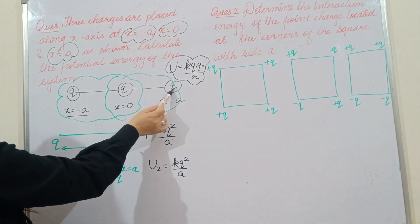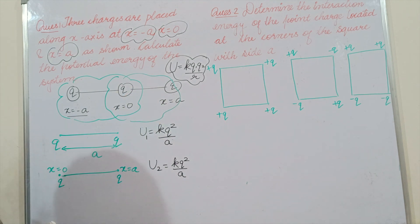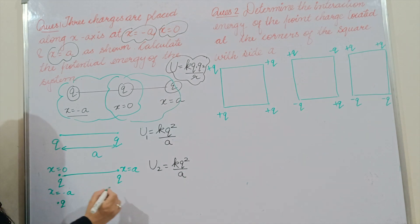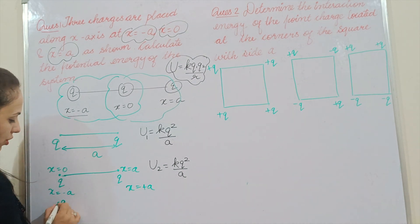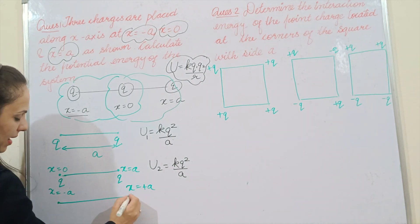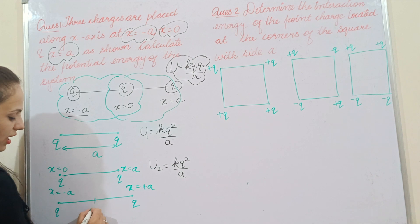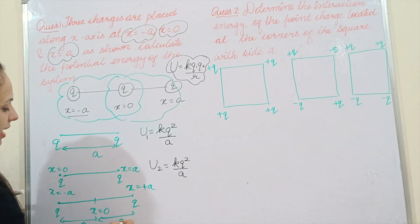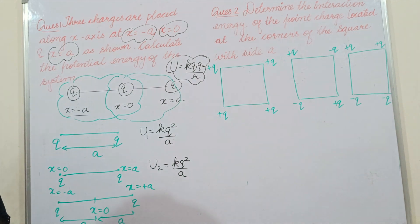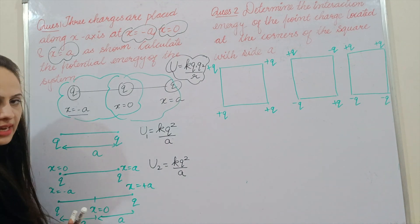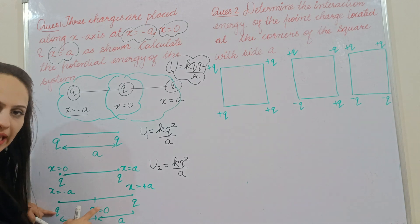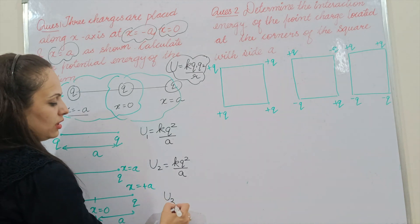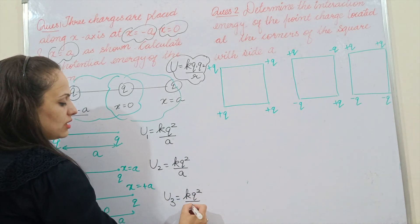The third combination is formed by the two extreme charges — one at x = -a and one at x = +a. The distance from -a to the origin is a, and from the origin to +a is also a, so the total distance is 2a. Therefore U3 = kq²/2a.